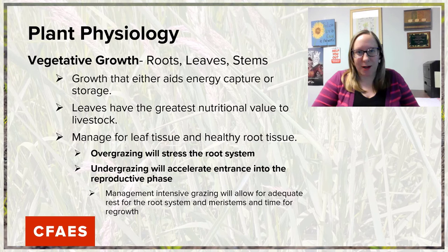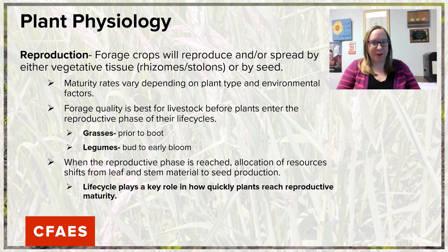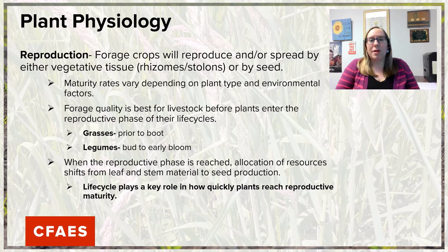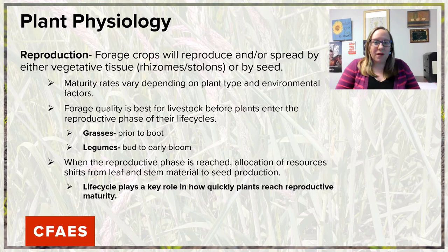After the vegetative stage comes the reproductive stage of growth. Many forage crops have the ability to reproduce either by vegetative tissue spreading or by the development of seed. The maturity rate at which plants reach the reproductive phase depends on the plant type, its life cycle, and the environmental factors surrounding it. Forage quality is best for livestock before plants enter that reproductive phase while they're still in the vegetative stage.